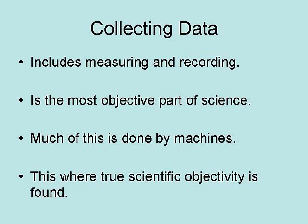Collecting data includes both measuring and recording. It is the most objective part of science, partly because much of this is done by machines. In any case, this is where true scientific objectivity is found. However, this process is not totally objective, partly because the selection of data to be tested is not always objective — it is often based on what the theory being used says to look for. Still, this part of the process remains the most objective.